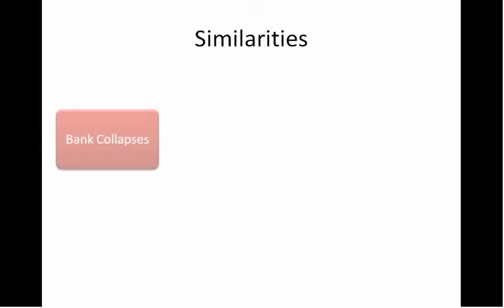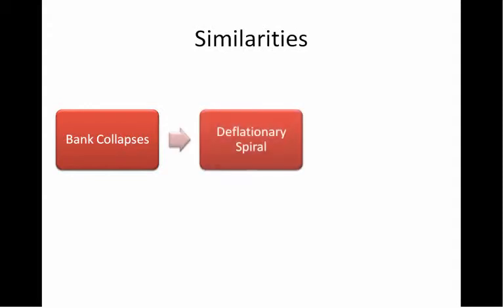In the Great Depression, everything started with bank collapses, and that's actually very similar to the credit crisis where we had Bear Stearns collapse, Lehman Brothers collapse, and a whole host of other smaller banks go under in a very short period of time. As a result, credit seized up and this led to a deflationary spiral. People spent less, the stock market contracted, real estate contracted, and ultimately this led to rising unemployment.